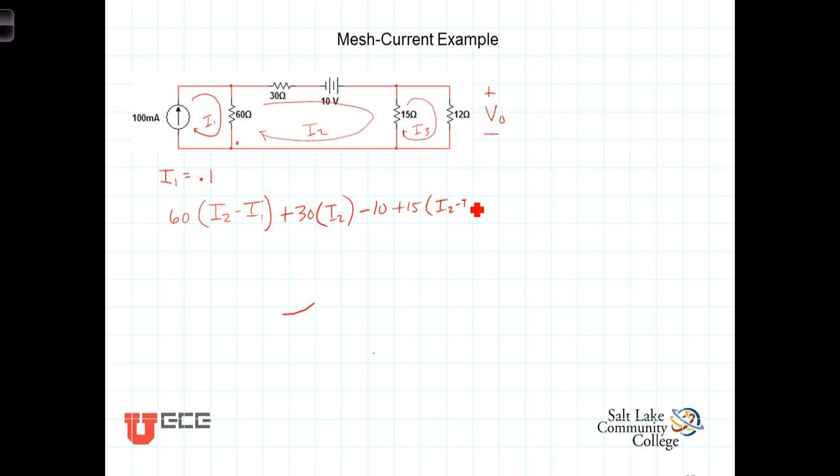And then finally, going around the right-hand mesh, we have 15 times (i3 minus i2) plus 12 times just i3 equals 0. That gives us three equations with three unknowns. I've already pointed out we know what i1 is, but let's just go ahead and write them, combining common terms and factoring out our mesh current variables.